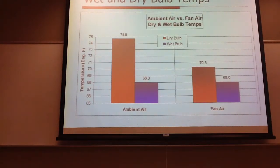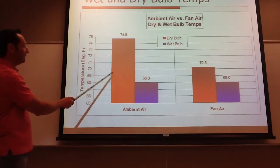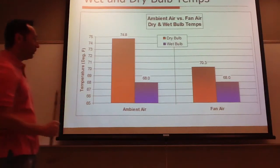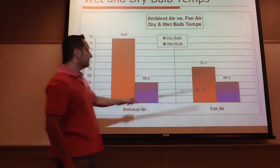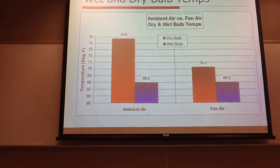This is the wet and dry bulb temperatures. Got the ambient air when it was tested. So the dry bulb on that was 74.8 degrees, and then 68 for the wet bulb. With the fan air, it was 70.3 and 68 for the wet bulb.